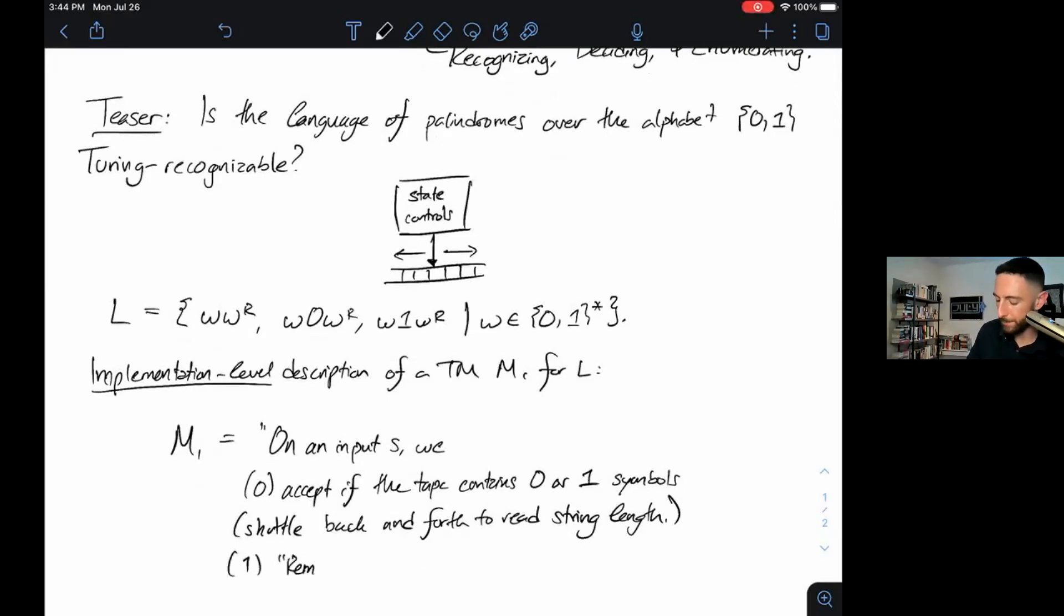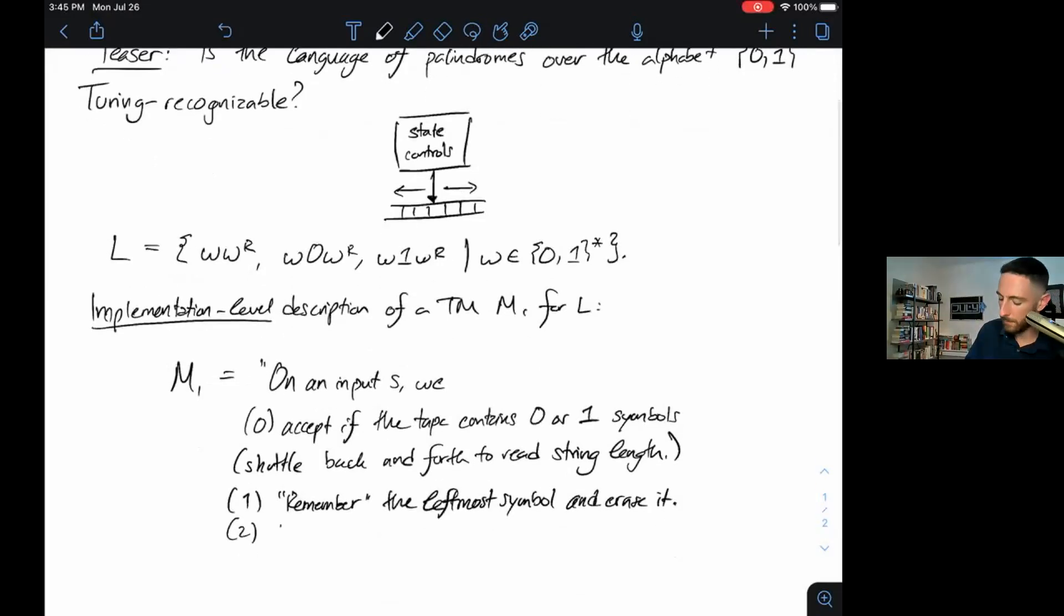Then we'll do the following repeatedly. We will remember the leftmost symbol, and we can remember it just by going to a state that corresponds to we just saw a 0 or we just saw a 1, and erase it. Reverse the tape and check if the rightmost symbol matches.